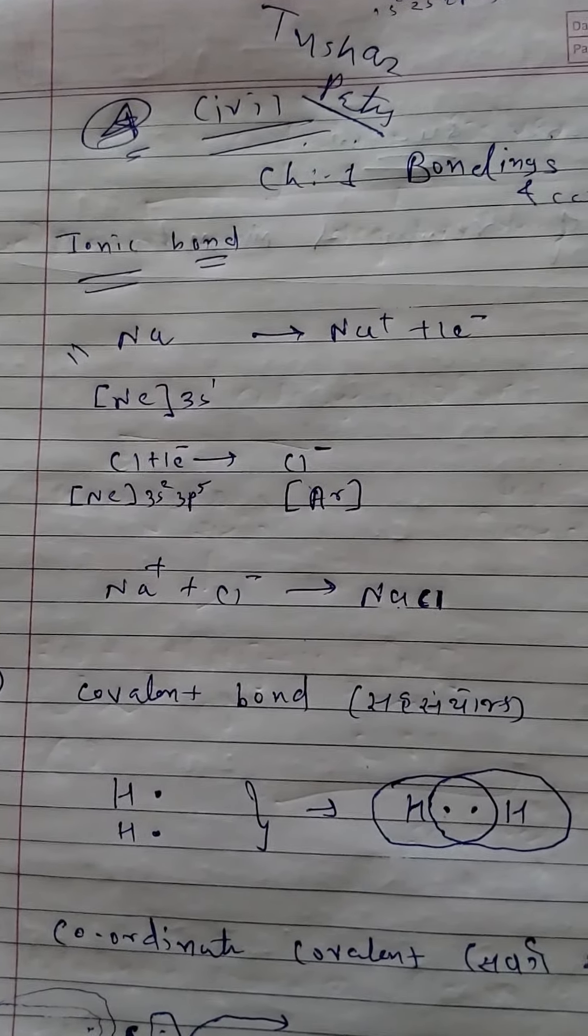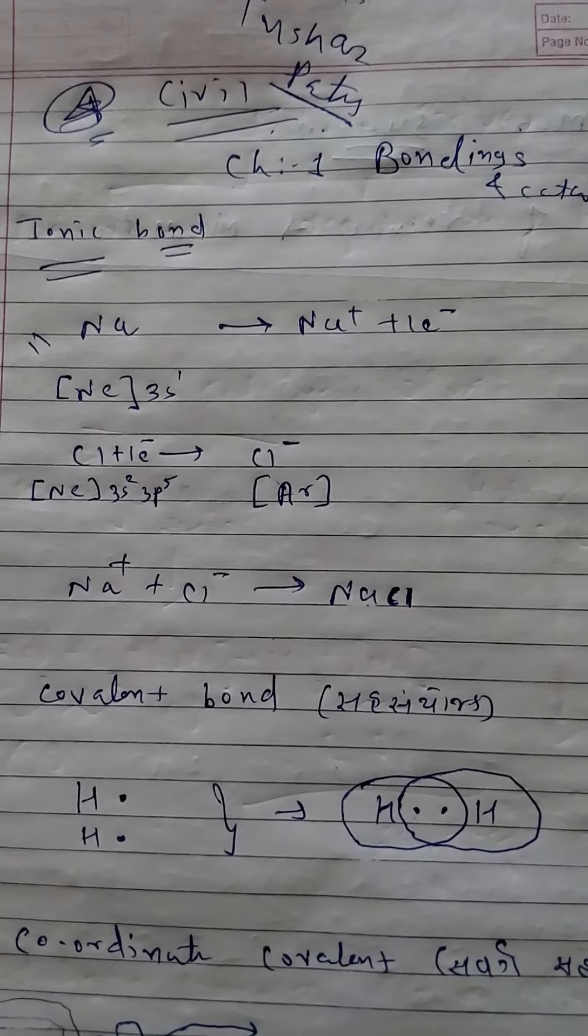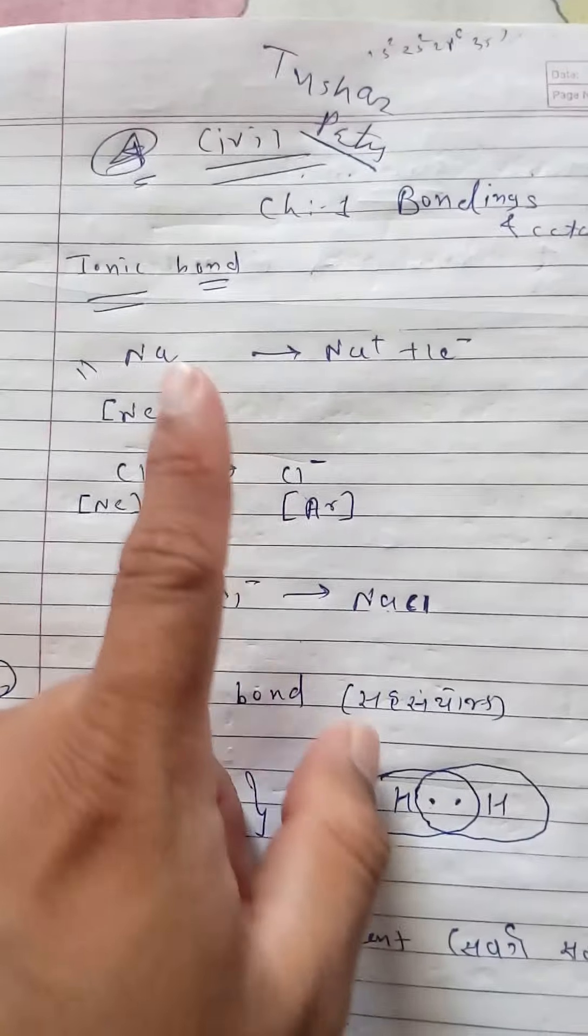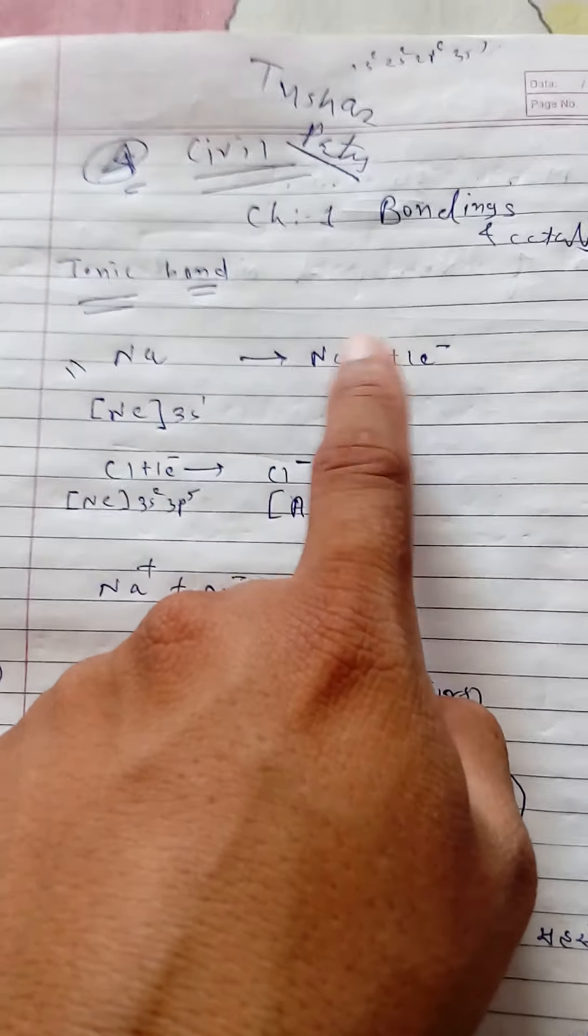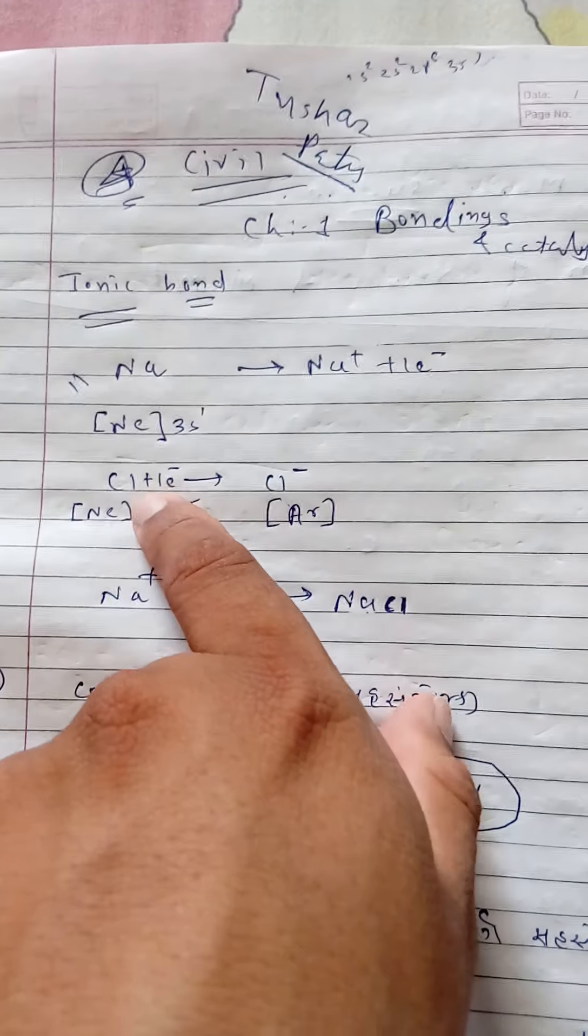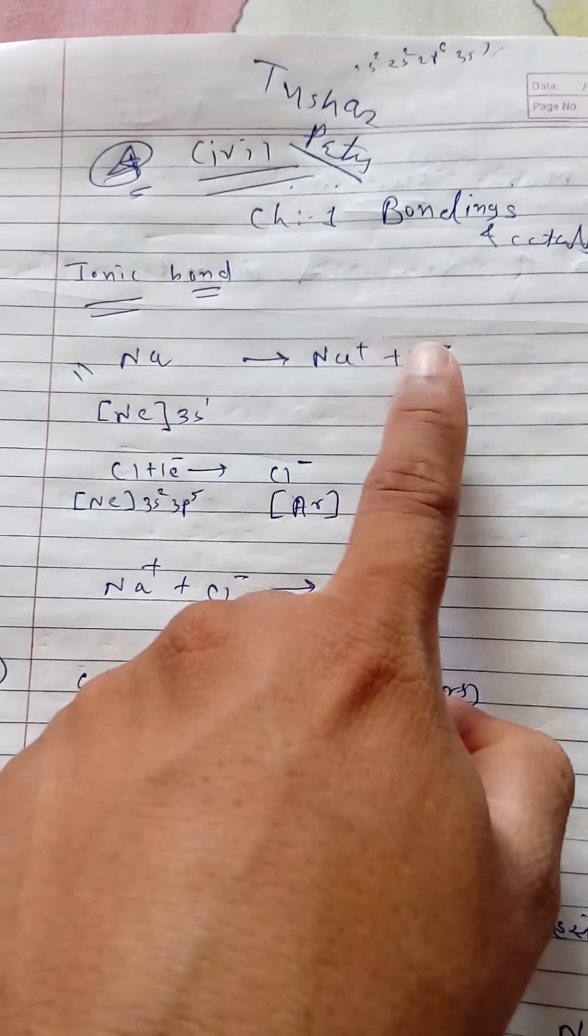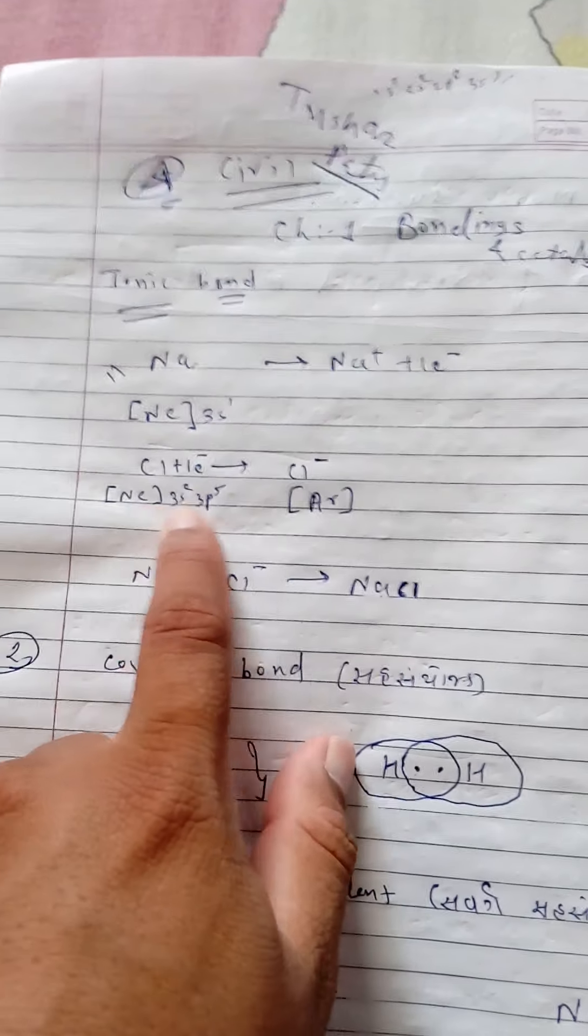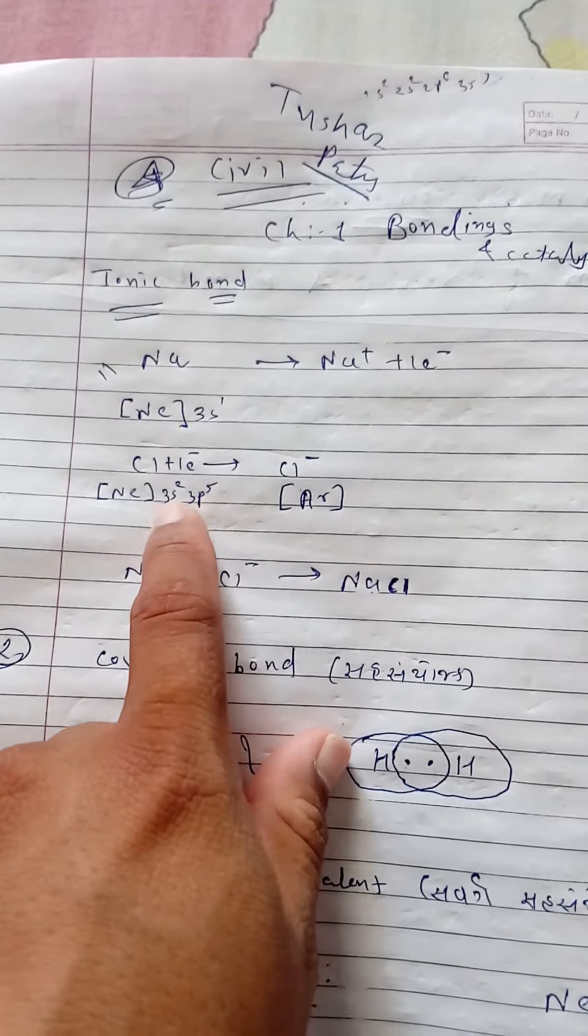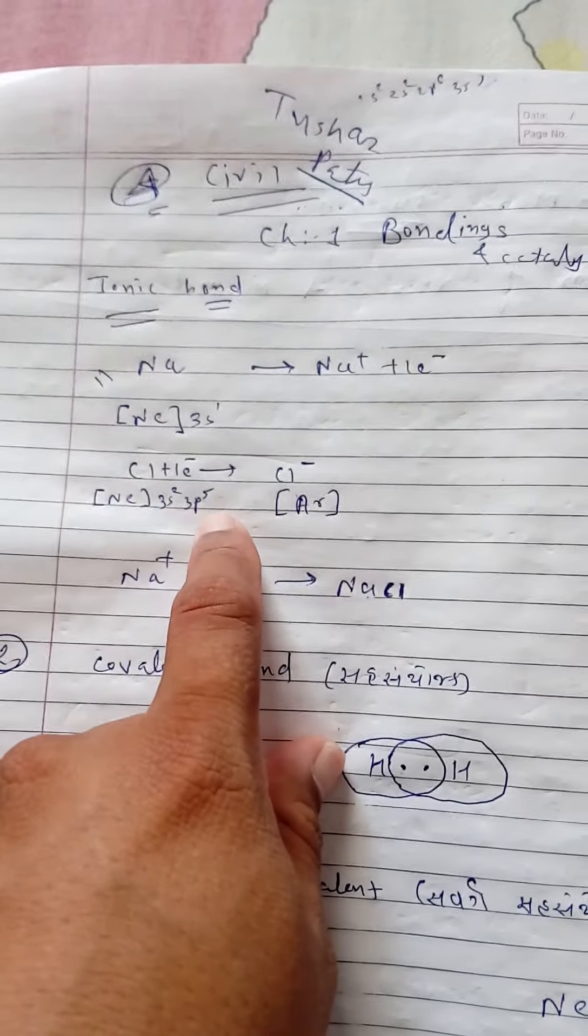If sodium removes one electron, it becomes a positive ion. Similarly, chlorine accepts this electron. Why does chlorine accept this electron?